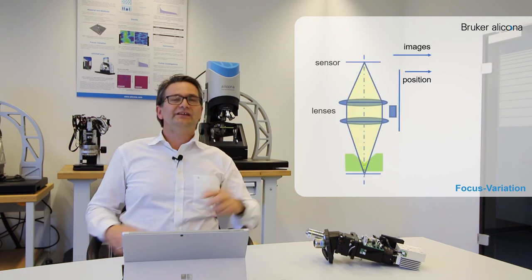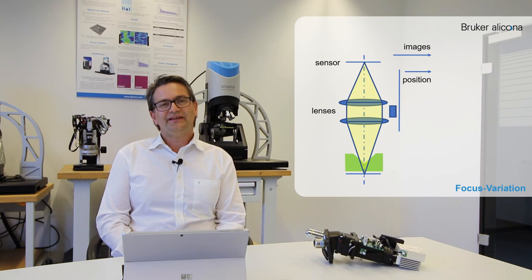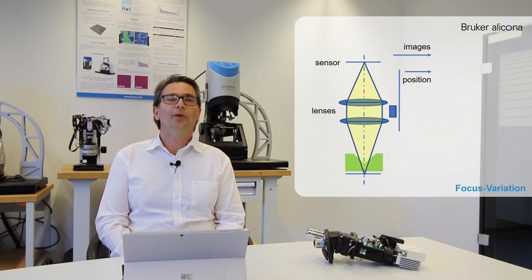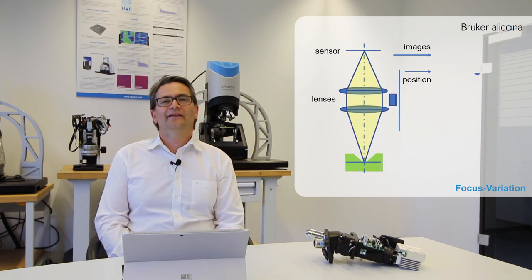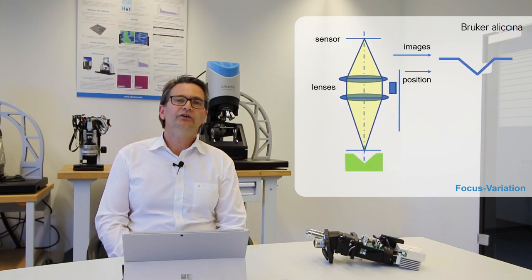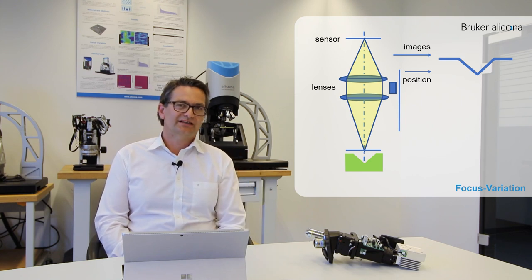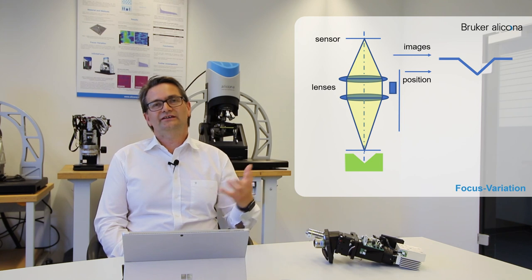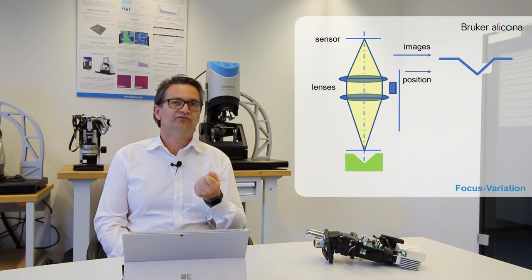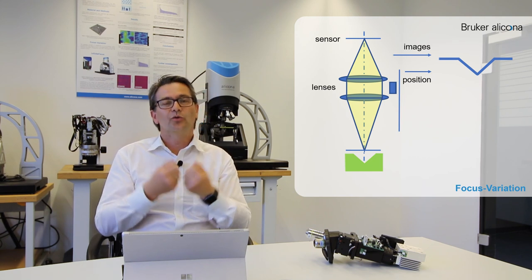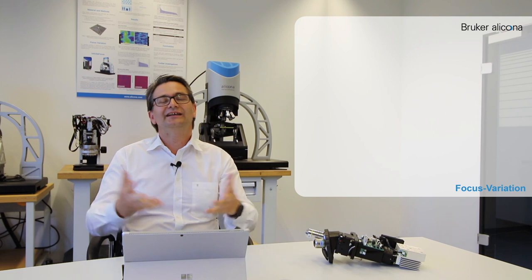Let's take a look at the complete system and how it really works. On the graphics here you see the optics, the lenses, the sensor, and an object. The whole optical setup is moving upwards, and a linear encoder is mounted to record the length that the optic has moved. The software acquires images from the sensor and data from the high-accuracy linear encoder, combining these to generate a 3D data set.